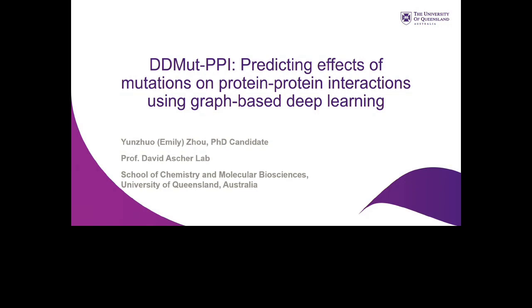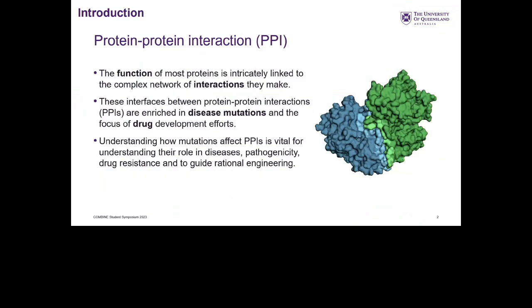Hello everyone, I am Yunzhuo, or you can call me Emily. I'm a PhD candidate from Professor David Asher's lab at the School of Chemistry and Molecular Biosciences at the University of Queensland. Today I'm going to present my work: DDMut-PPI — predicting effects of mutations on protein-protein interactions using graph-based deep learning.